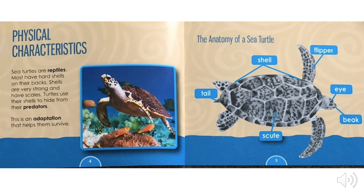The anatomy of a sea turtle includes: tail, shell, flipper, eye, beak, and snout.